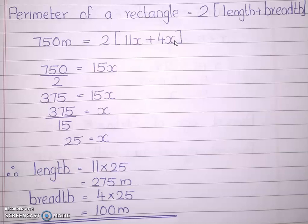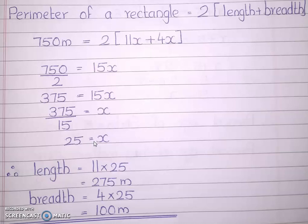What is this 11x and 4x doing here? In the first step we took 11x as the length and 4x as the breadth. Now taking 2 to the other side: 750 divided by 2 equals 15x. 750 divided by 2 is 375, so 375 equals 15x. The 15 comes from 11 plus 4. Now 15 into x — taking 15 to the other side it becomes division. 375 divided by 15 equals 25. So the value of x is 25.